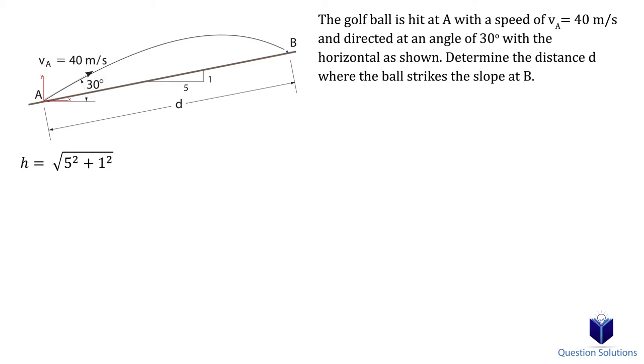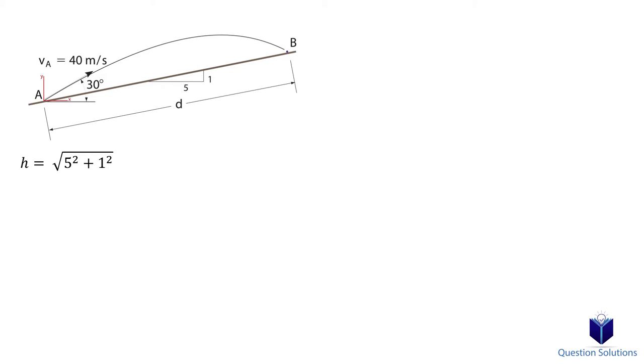Now we can write down what we know. In the horizontal direction, the starting location is at 0 meters. Point B is D multiplied by 5 over hypotenuse. We can write that as a decimal number. The velocity in the horizontal direction is 40 cos 30 degrees.